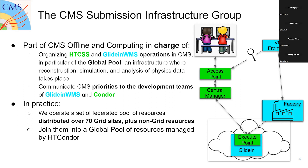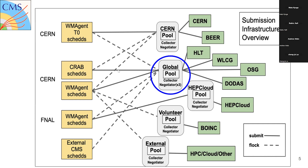The group in the CMS experiment that makes those resources available to scientists is the Submission Infrastructure group, part of the offline computing group in CMS. We organize the HTCondor software system and GlideinWMS operation in CMS. In particular, we operate the Global Pool, which is the infrastructure where all simulation and analysis takes place. We communicate priorities with GlideinWMS and the Condor developers, and we operate this big pool of resources distributed over 70 grid sites plus non-grid resources.